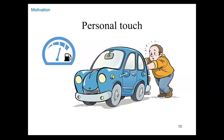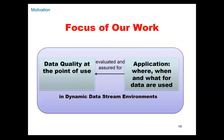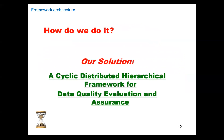The key phrase here is 'if only I knew.' If you knew you couldn't trust a sensor, you could make a better decision. What we are trying to do is develop a framework that presents the user with data plus quality indicators, so the user can make a better decision. We are going to evaluate data quality at the point of use for a particular application. Our major solution is a cyclic distributed hierarchical framework for data quality evaluation and assurance.